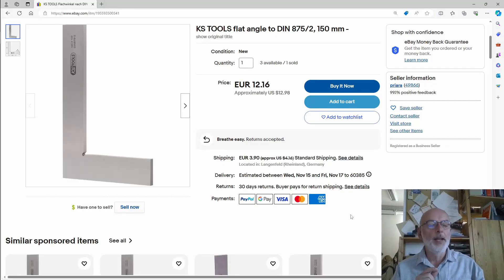So here's the listing for that square, again on eBay.com. I ordered it from eBay Germany. $12.16 plus $3.90 shipping from Priara. No translation there, that's just the name.